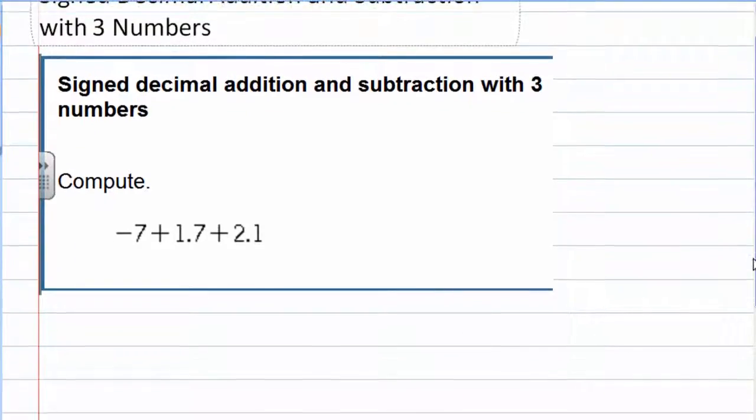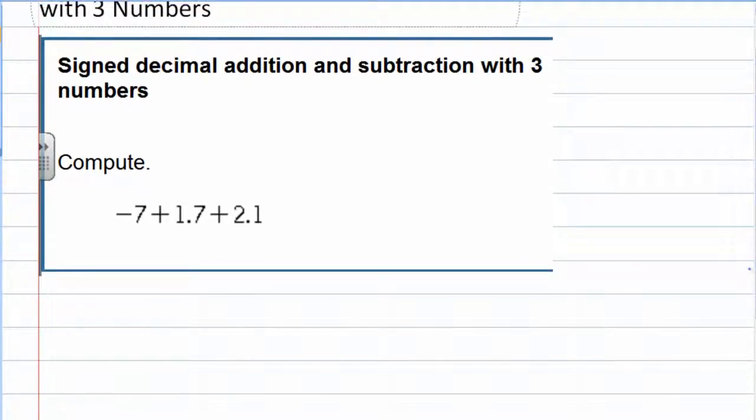In this problem set we have some numbers we're asked to add or subtract. This is set up so that it's all addition. However, the first one is negative and the other two are both positives.